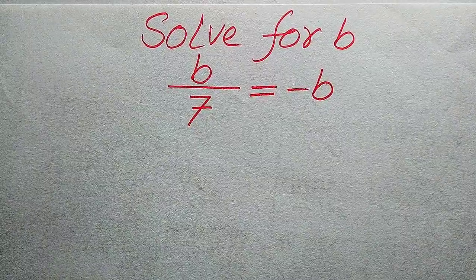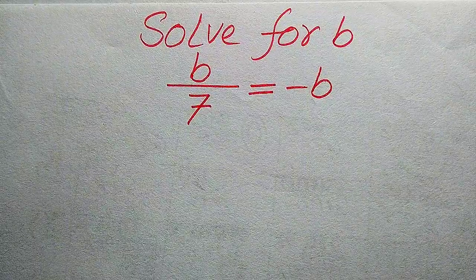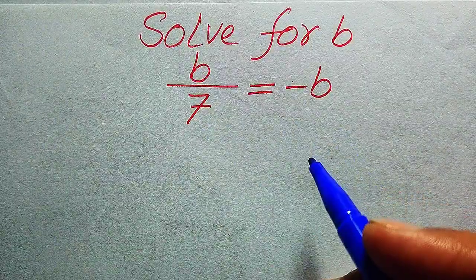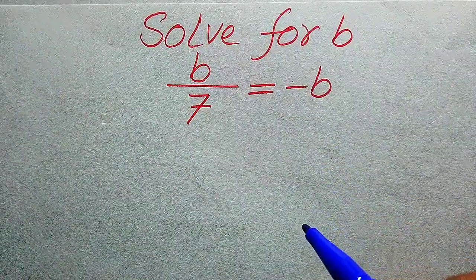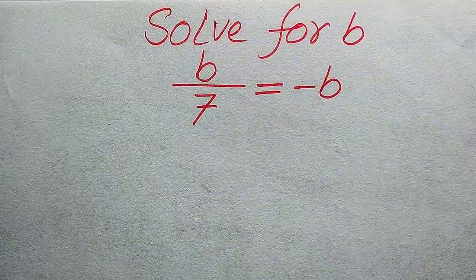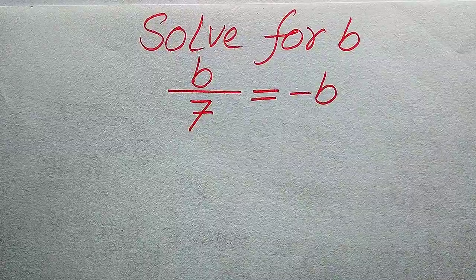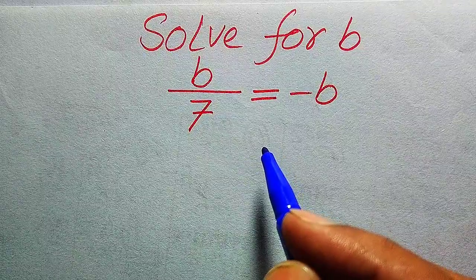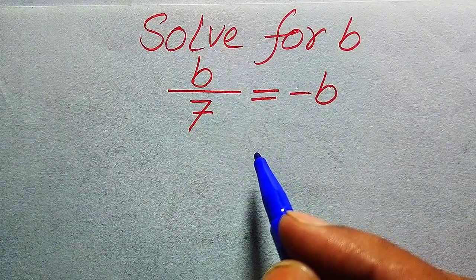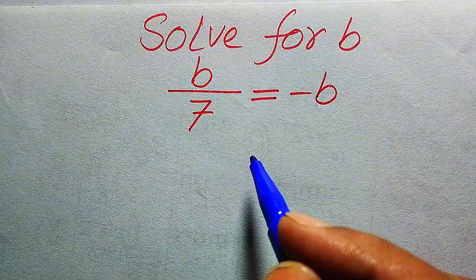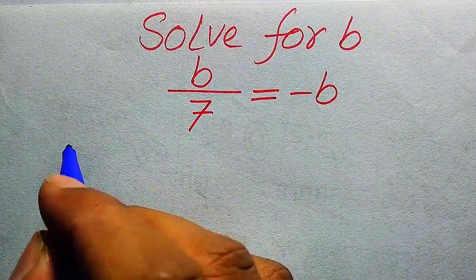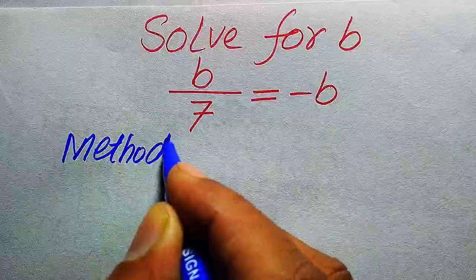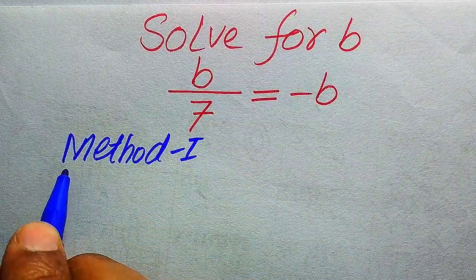Hello everyone. How to solve this problem: for the values of b, if we have b divided by 7 equals minus b, and we solve this problem for all the values of b. Here, first we find all the roots of this equation, and at the last we will verify which of the roots are solutions and which are extraneous roots. We solve this problem using two methods.